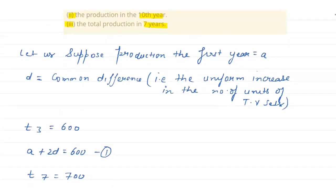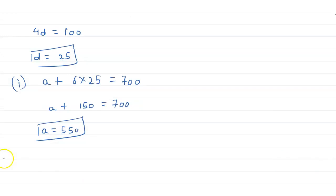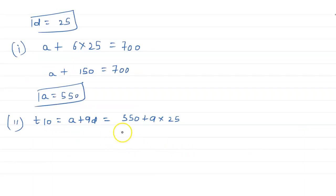So now this is the first part. Second part is the production in the tenth year. So we have to find t10. This will be equals to a plus 9d, 550 plus 9 into 25. So 550 plus 225 will be equals to 775.